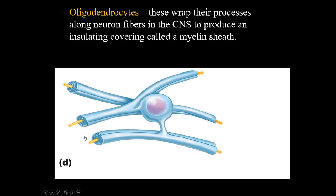In your notes, put a bracket to the left of numbers 1 through 4: astrocyte, microglial cell, ependymal cell, oligodendrocyte. Once you have that bracket, write next to it CNS. Those four types of cells are only present within the central nervous system and so they're going to be functioning there.